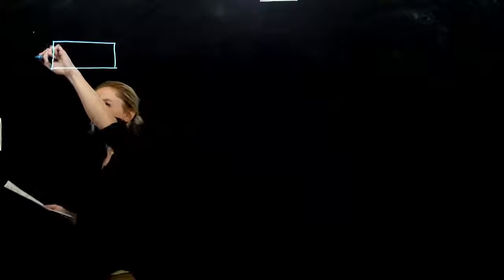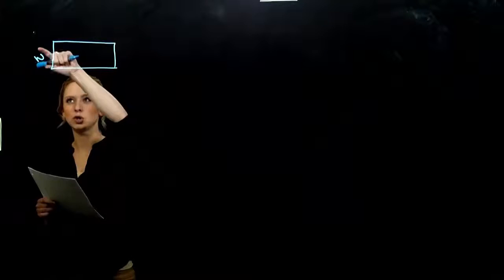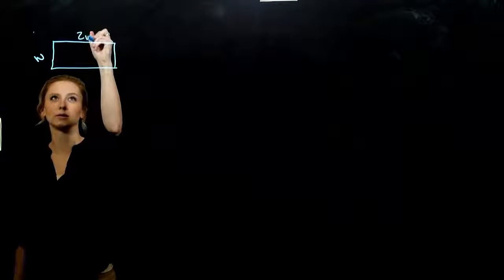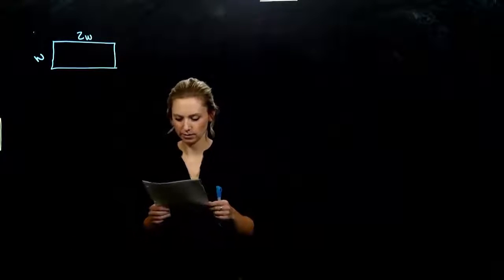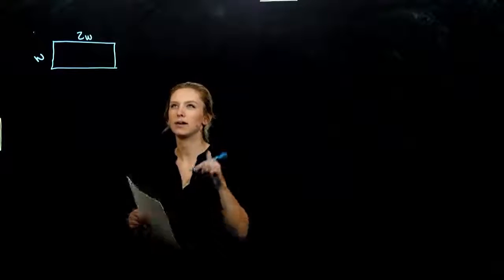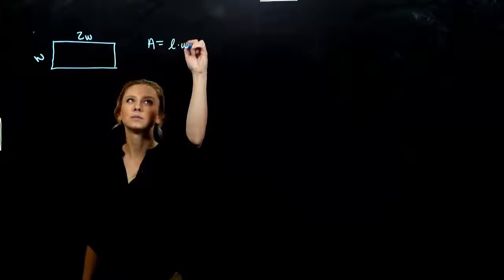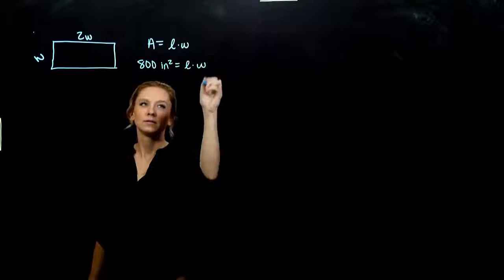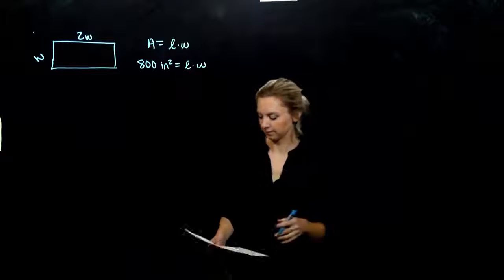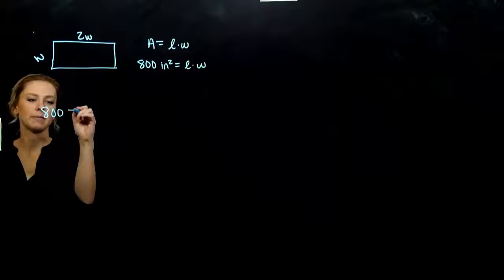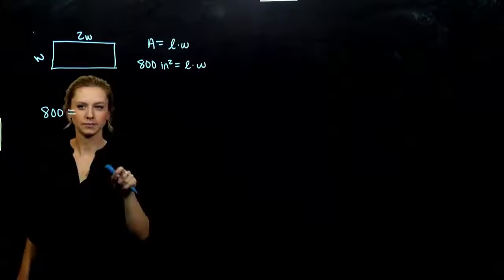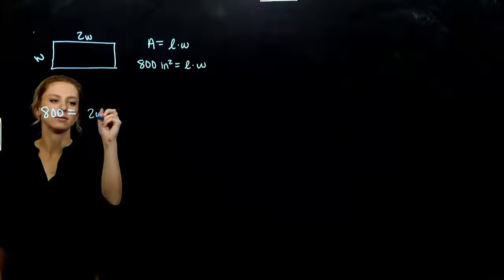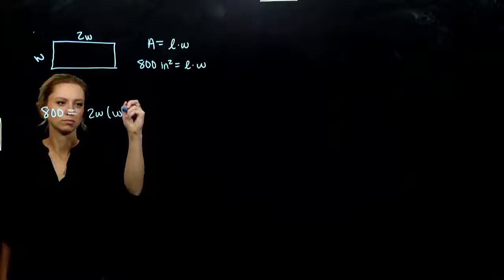It is twice as long as it is wide. So if my width is W, what can I say about my length? It's two times the width — twice as long as the width is my length. The other piece we know is that the area is 800 square inches. Area of a rectangle is length times width. So 800 equals the length, which is 2W, times the width, W. I'm going to drop the units and just worry about them at the end.